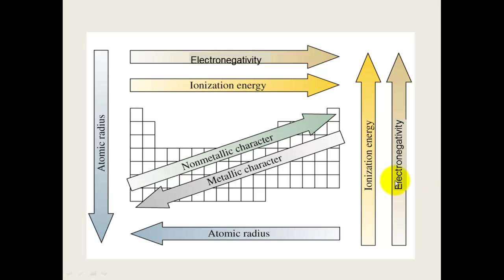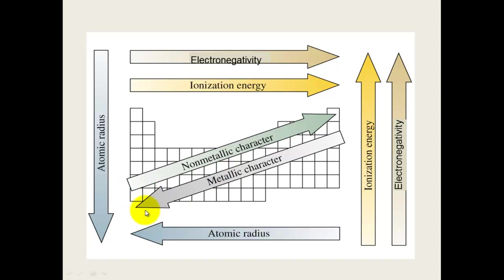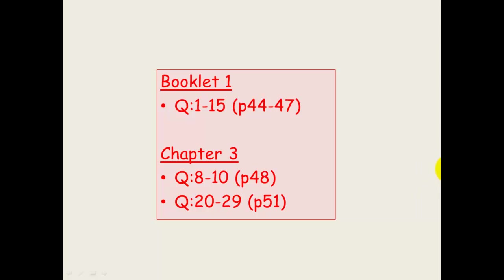In summary: atomic radius increases as you go down a group and decreases as you go across a period. Electronegativity and ionization energy both increase as you go across a period and decrease as you go down the periodic table. You can also look at metallic and non-metallic character — the strongest metals are in the bottom-left section, while the least metallic elements are in the top-right.